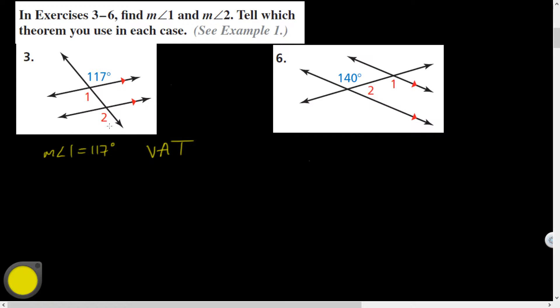And then let's see, measure of Angle 2 is going to be congruent to measure of Angle 1. So its measure is going to equal 117 degrees. I could have proven that using alternate exterior or I could have proved it using either Corresponding Angles Theorem or Alternate Exterior Angles Theorem.